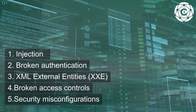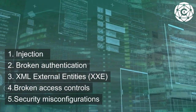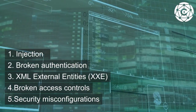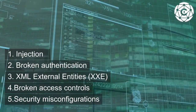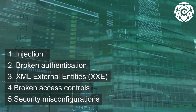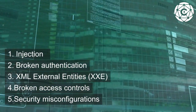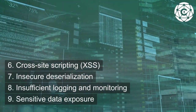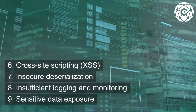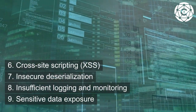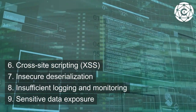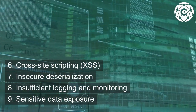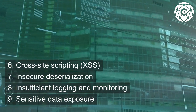What are the OWASP Top 10 Application Security Risks? 1. Injection, 2. Broken Authentication, 3. XML External Entities (XXE), 4. Broken Access Controls, 5. Security Misconfigurations, 6. Cross-Site Scripting, 7. Insecure Deserialization, 8. Insufficient Logging and Monitoring, 9. Sensitive Data Exposure.